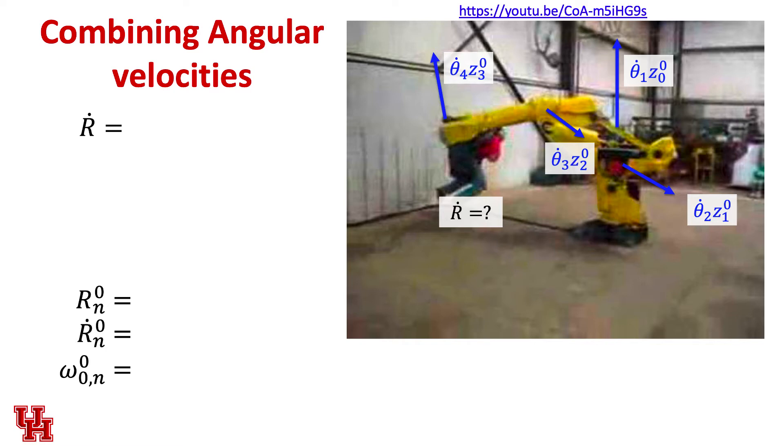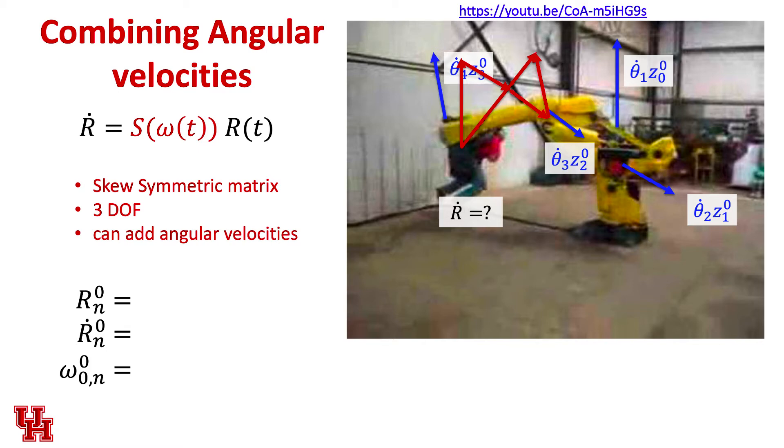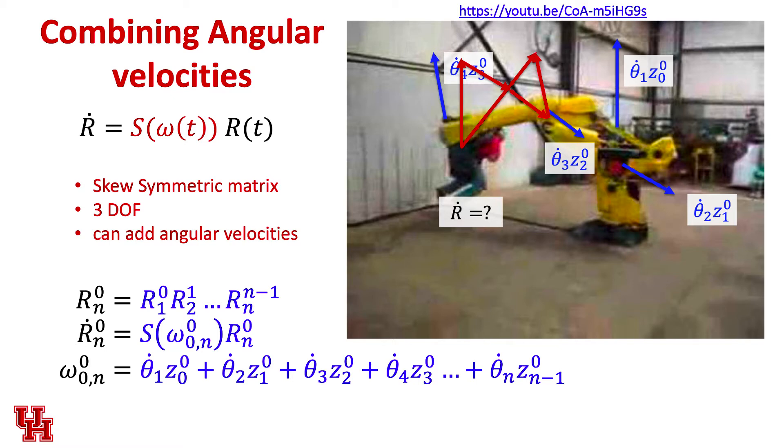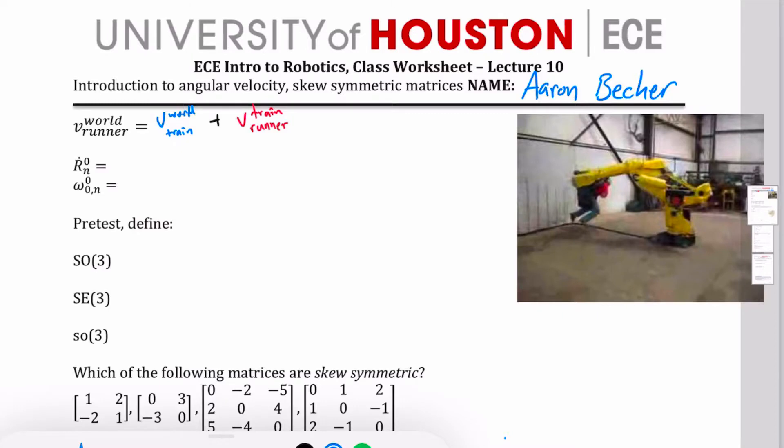And we can just add them together if they're all in the zeroth frame. And so our first one is our theta one dot times z zero. And then we've got our theta two dot times z one, our theta three times z two, and then our theta four times z three. And that gives us our net rotation around there. And so our r dot is going to be a rotation of a special matrix that is multiplied by the current orientation of the end effector. And this matrix that we have here, we call it S of omega t. This S is a special matrix. It has a property called skew symmetry. It has three degrees of freedom, which you can see because we've built it up by rotations around arbitrary axes. What it does is it allows us to add our angular velocities. So what we're going to be able to do then is define these. I'm going to work that out by hand so you can see that.